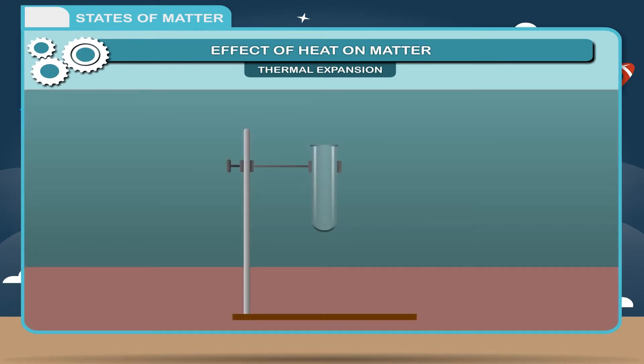Activity. Take a test tube and fill it to the brim with water. Take a rubber stopper and make a small hole in it. Put it on the mouth of the test tube. Put a small capillary tube through the hole in the cork. Water will rise in it. Now, heat the test tube. You will notice that the water will rise further in the capillary tube. This shows that liquid expands on heating.